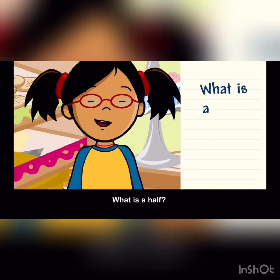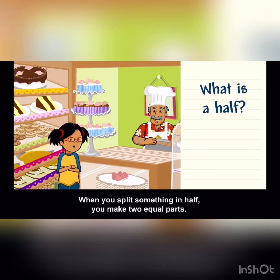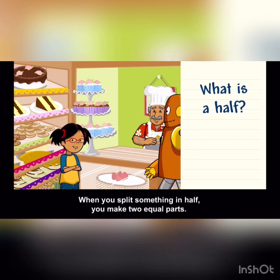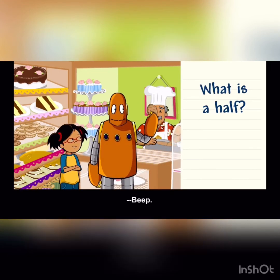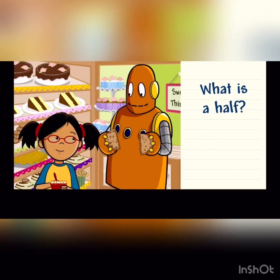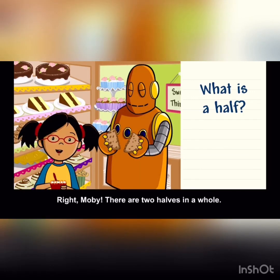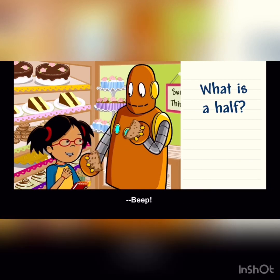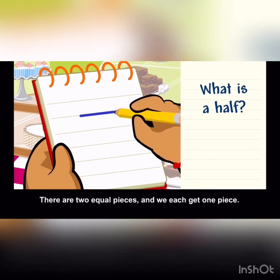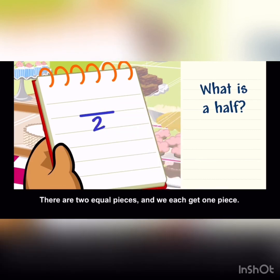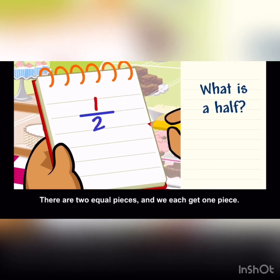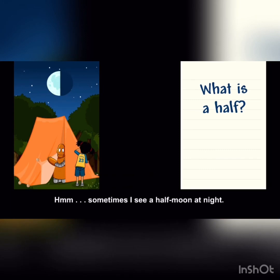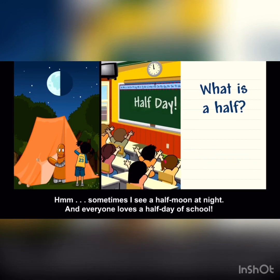You can also write this as one half. What is a half? When you split something in half, you make two equal parts. There are two halves in a whole — half for you and half for me. There are two equal pieces and we each get one piece. Sometimes I see a half moon at night, and everyone loves a half day of school.